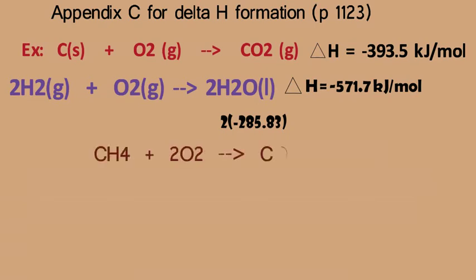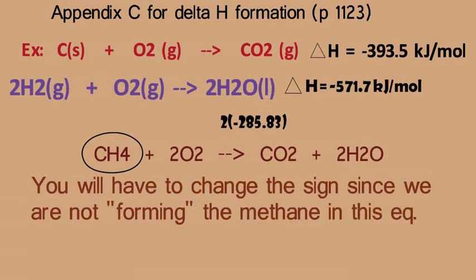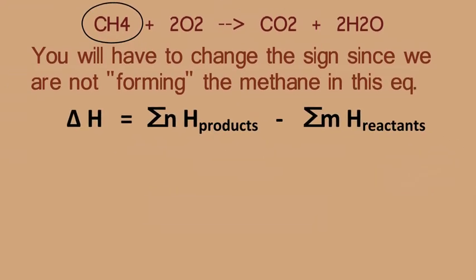Let's look at the combustion of methane. CH4 plus 2O2 yields CO2 plus 2H2O. Let's take a closer look at methane, CH4. In the book, it's heat of formation of methane. This is not forming methane. This is combusting it. So you have to change the sign since we're not forming it.